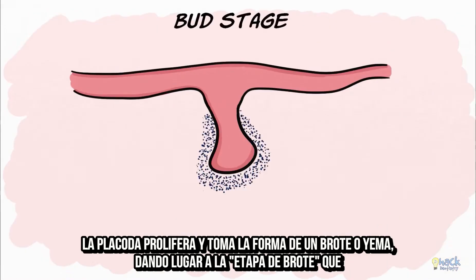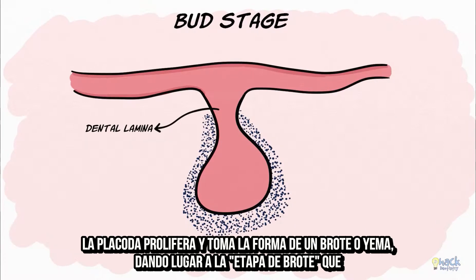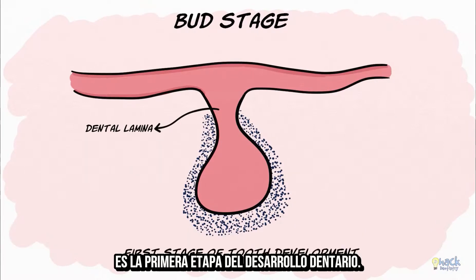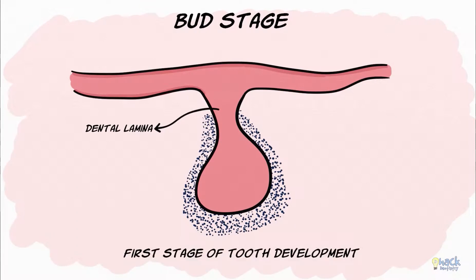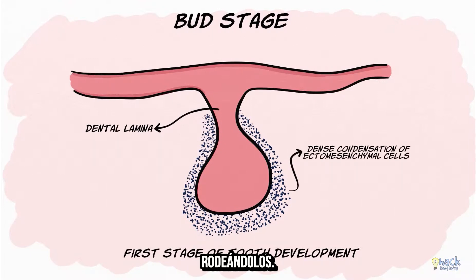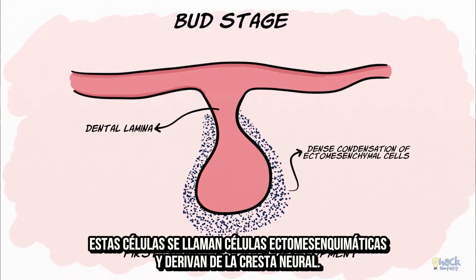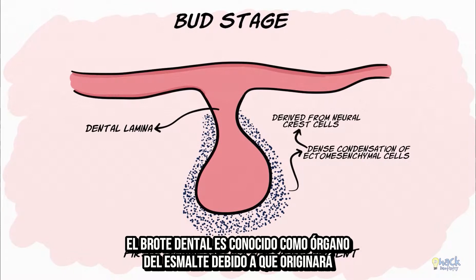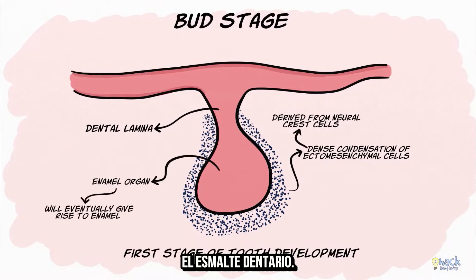The placode then proliferates and takes the shape of a bud, giving rise to the name bud stage, which is the first stage of tooth development. During the process of tooth bud formation, there is also a dense condensation of cells surrounding the tooth bud. These cells are called ectomesenchymal cells and are derived from the neural crest cells. The tooth bud is referred to as the enamel organ, due to the fact that it would eventually give rise to the enamel of the tooth.